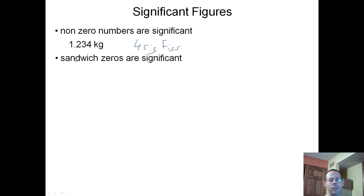What I call sandwich zeros are significant. Sandwich zeros are just zeros between significant numbers. So we have 606. This 6 is significant because it's not zero. That is significant. We have two pieces of bread and a piece of meat, or for vegetarians, a piece of lettuce. We have three sig figs in this measurement.